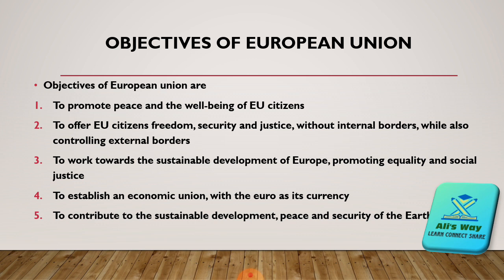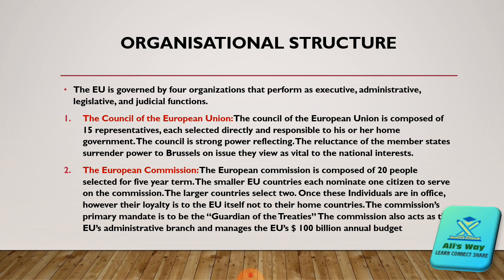Now we are going to discuss the organizational structure of the European Union. The European Union is governed by four organizations, which perform executive, administrative, legislative, and judicial functions. The first body of the European Union is the Council of the European Union. The Council is composed of 15 representatives, each selected directly and responsible to his or her home government. The Council is the executive body of the European Union — it implements the decisions taken in the European Union Parliament or by the European Commission.